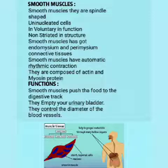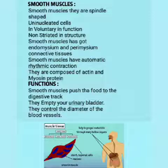Smooth muscles have endomysium and perimysium connective tissues. Smooth muscles have automatic rhythmic contraction. They are composed of actin and myosin protein. Functions of smooth muscles: